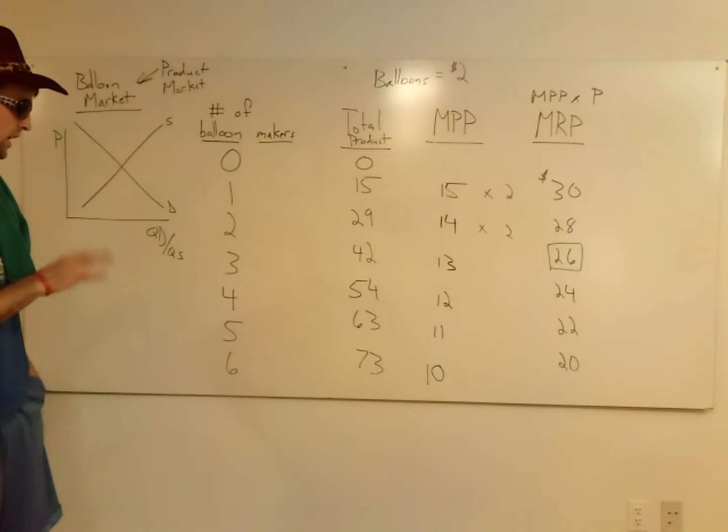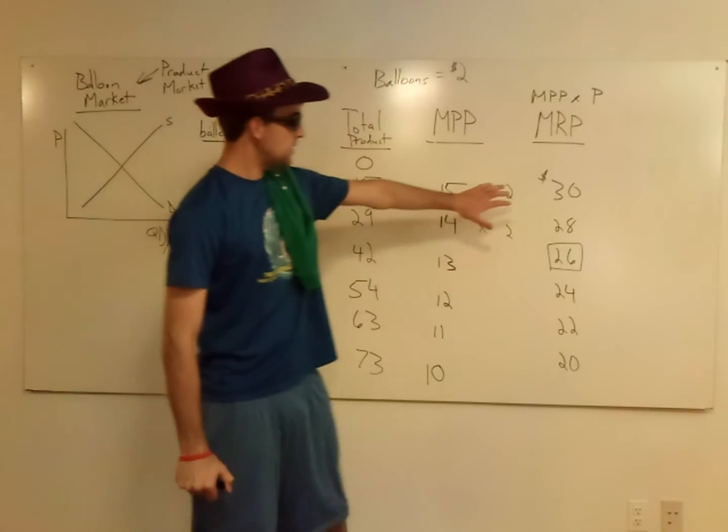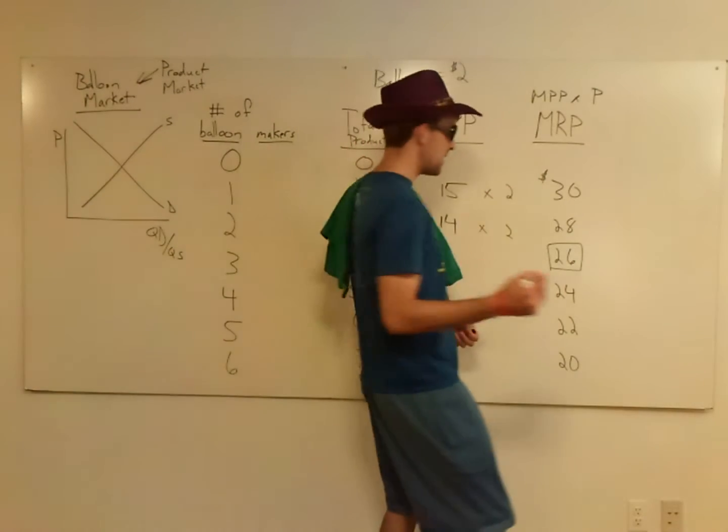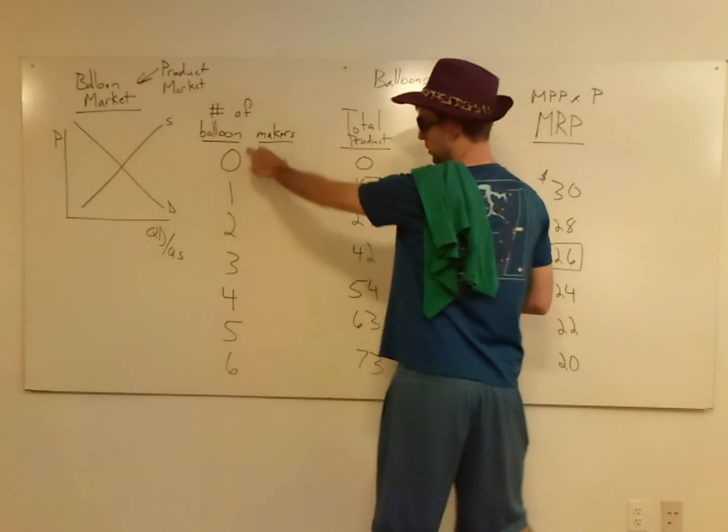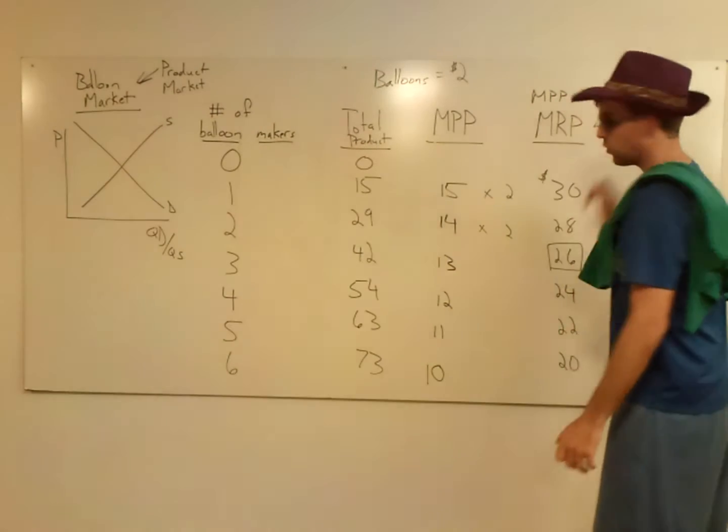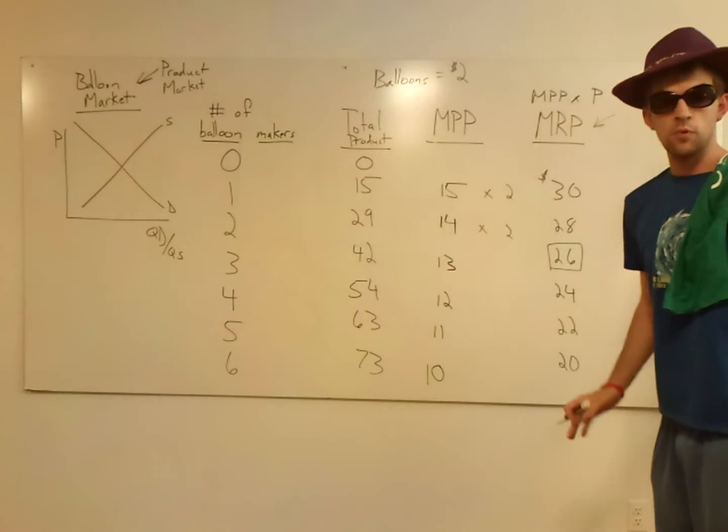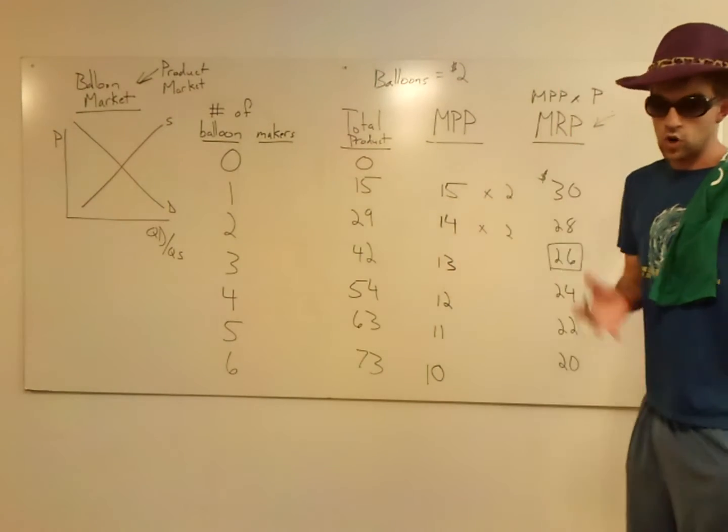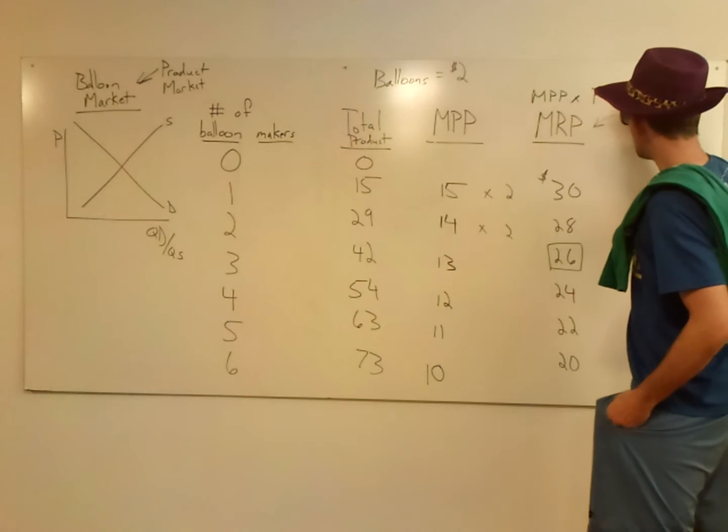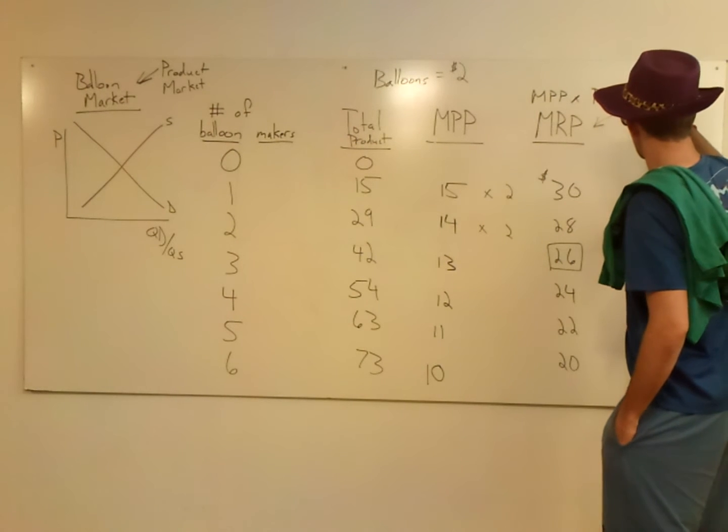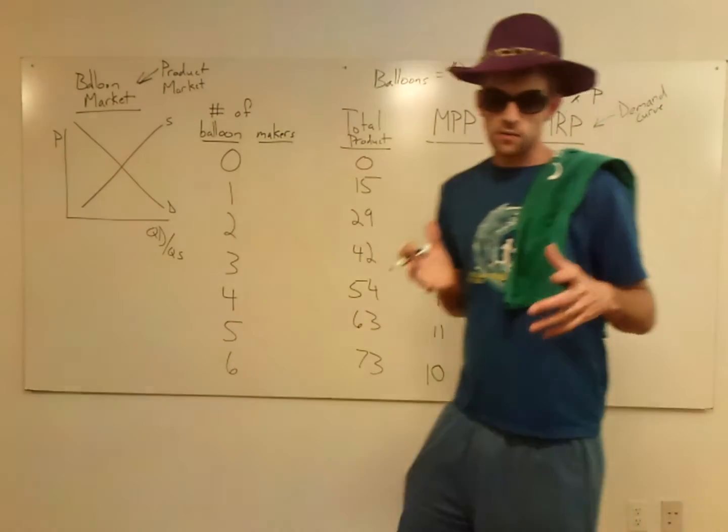They've got to have this inverse relationship going on here. And so this right here is actually the demand for your balloon makers, or whatever your input is - it could be a machine or a piece of property. So this is your demand curve in the factor market.